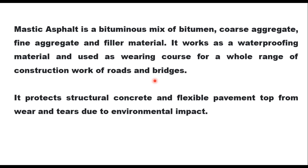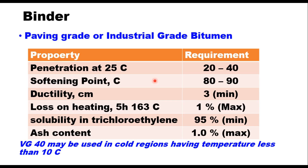Materials for making mastic asphalt are the same as for any other bituminous mix but requirements are different. Here we need a harder grade of binder. Binder can be either paving grade or industrial grade bitumen. Penetration should be 20 to 40. Softening point 80 to 90 degrees Celsius. Ductility should be at least 3 cm.